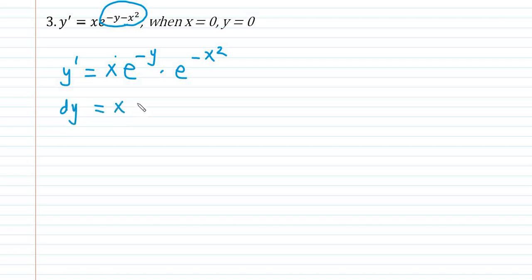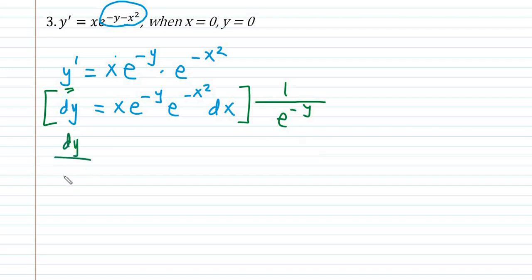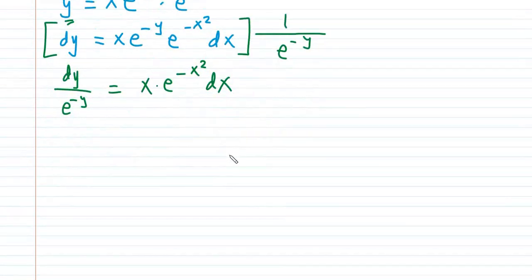dy is equal to x e raised to negative y times e raised to negative x squared, differential x. Here y is our dependent variable and we want to solve for y in the particular solution. So what we are going to multiply to our differential equation is 1 over e raised to negative y, giving us dy over e raised to negative y is equal to x times e raised to negative x squared, differential x.